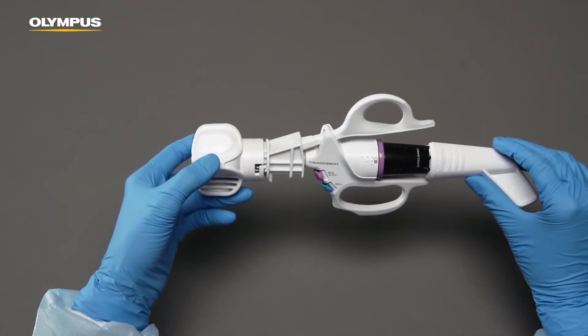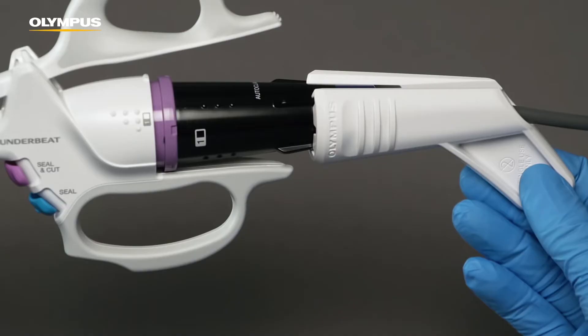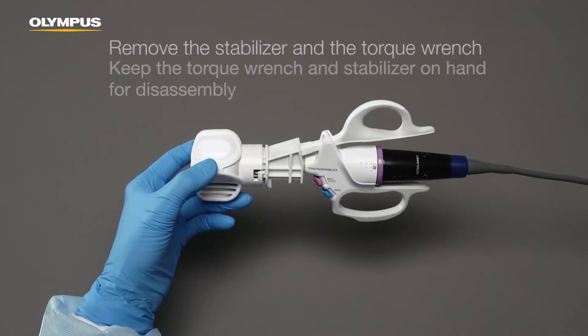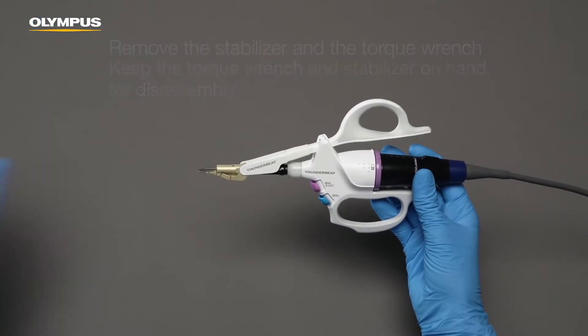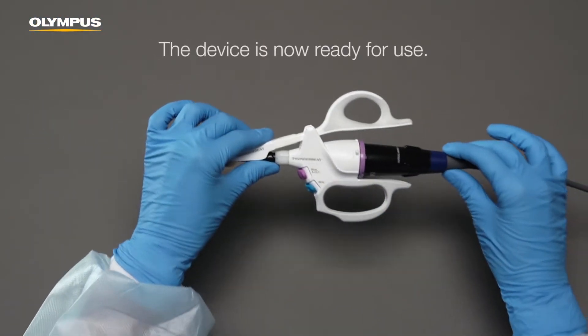Now the transducer and the device are firmly connected. Remove the stabilizer and the torque wrench. The device is now ready for use.